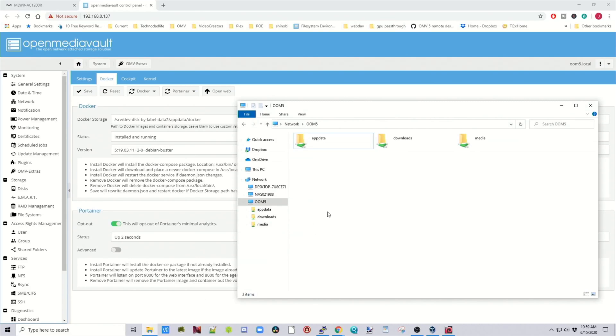Now if we go to our shared folders on the network, we can see that Portainer is now installed in that Docker folder. So click on File Explorer. And so now we're in our server.